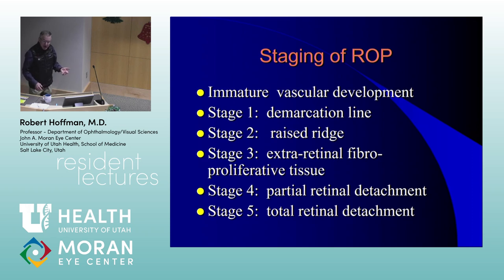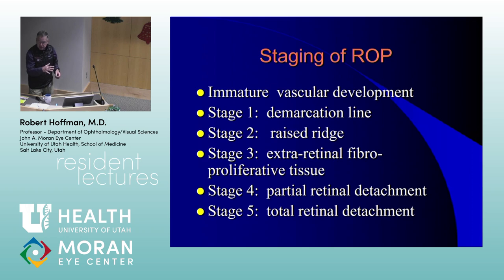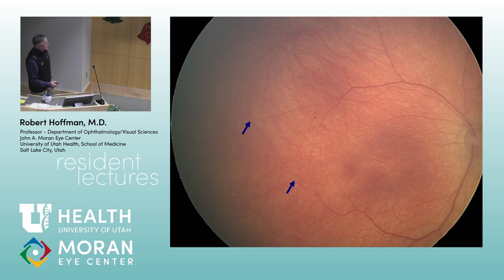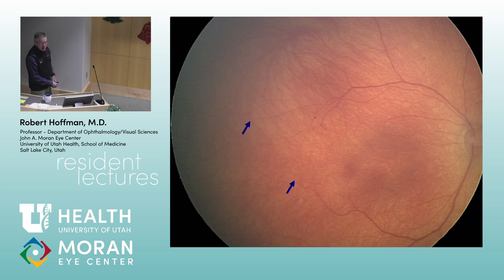Staging: with incomplete vessel development you just see blood vessels stop. Stage 1 — there's a line at the end of normal vascular development. Stage 2 — you have a raised ridge. Stage 3 — you've got extra-retinal neovascular tissue growing up over or on top of the ridge. Stages 4 and 5 are types of retinal detachment. This whole process is driven by development of vascular endothelium from the cells that become vascular endothelial cells.